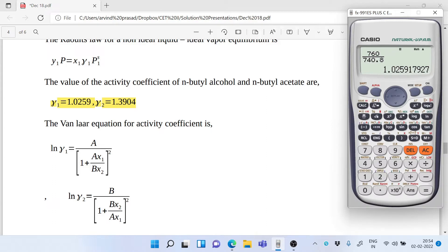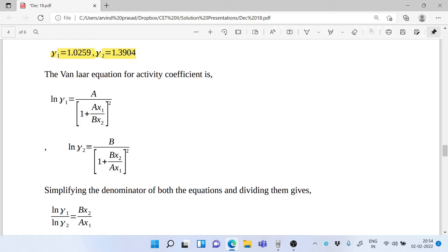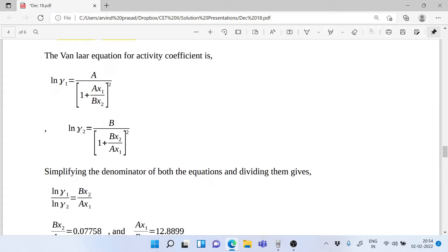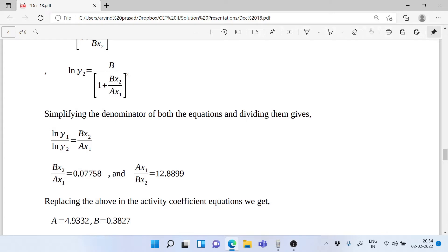After that, now the Van Laar activity coefficients A and B, and the Van Laar's equation is on your screen. When we simplify this, we simplify the denominator and divide it. You get this equation: ln γ₁ over ln γ₂ = B·x₂/(A·x₁). You already have γ₁ and γ₂, so you have B·x₂/(A·x₁) as this value, and the reciprocal of this would be A·x₁/(B·x₂), and you have this value that is 12.8899.